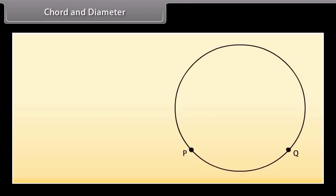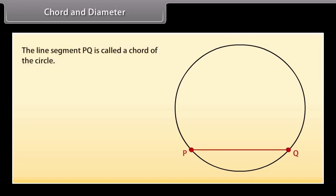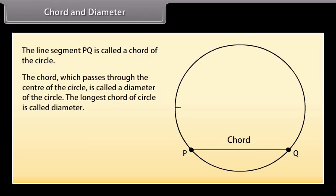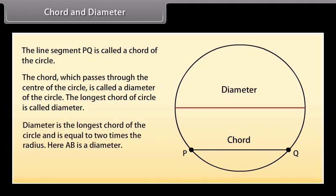Chord and diameter. If you take any two points on the circle, say P and Q, and join them, then the line segment PQ is called a chord of the circle. The chord which passes through the center of the circle is called a diameter. Diameter is the longest chord of the circle and is equal to two times the radius. Here we can see that AB is a diameter.